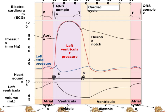Starting at the top, let's walk through this. At the P wave, what is occurring? Depolarization of the atria. Right after the atria depolarize, they contract. The PQ segment is atrial contraction. The left atrial pressure rises, and as the atria contract, blood is pushed — the atria is higher in pressure than the ventricle, so blood flows from higher to lower pressure into the ventricle.